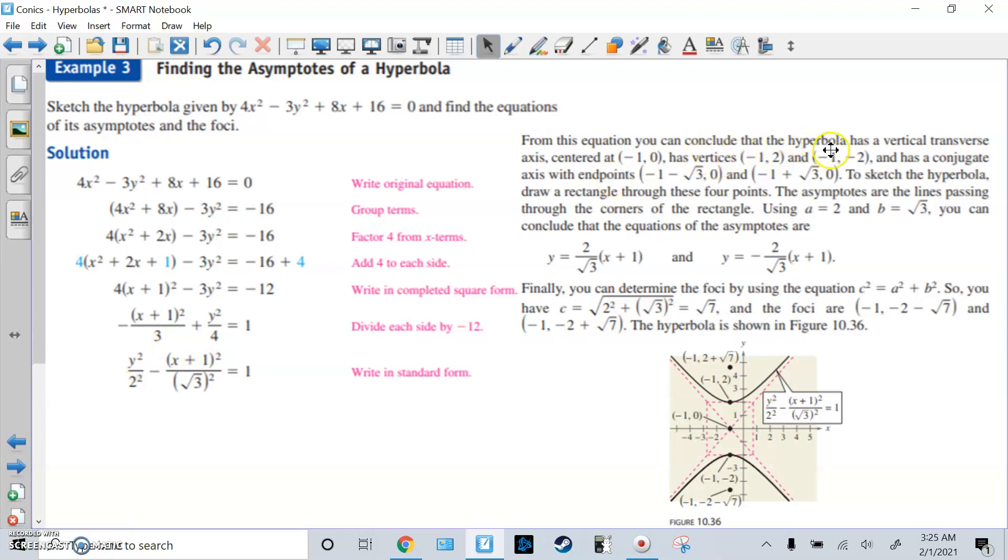From this equation we conclude that our hyperbola is vertical because it's y squared. The center is negative 1, that's h, 0 for k. Vertices: negative 1, 2 and negative 1, negative 2. We know that because we're going to go up and down 2 from the center (negative 1, 0). So up 2 is negative 1, 2. Down 2 is negative 1, negative 2.